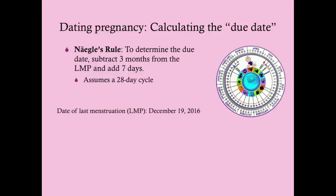To date the pregnancy assuming a 28-day cycle, we use Naegele's rule: take the date of the last menstruation, subtract three months, then add seven days. Use common sense about whether to add a year. For example, if her last menstruation was December 19th, 2016, subtracting three months and adding seven days gives you September 26th — and since we're going into the new year, it would be September 26th, 2017.